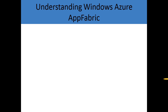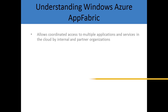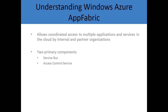Understanding the Windows Azure App Fabric Service — typically what you'll find in a lot of cloud-based implementations is there can be any number of applications and services running in the cloud, and the challenge is coordinating the access to those apps and services amongst not only your own internal organization, but any partner organization that you might also deal with. So there are a couple of primary components that are involved.